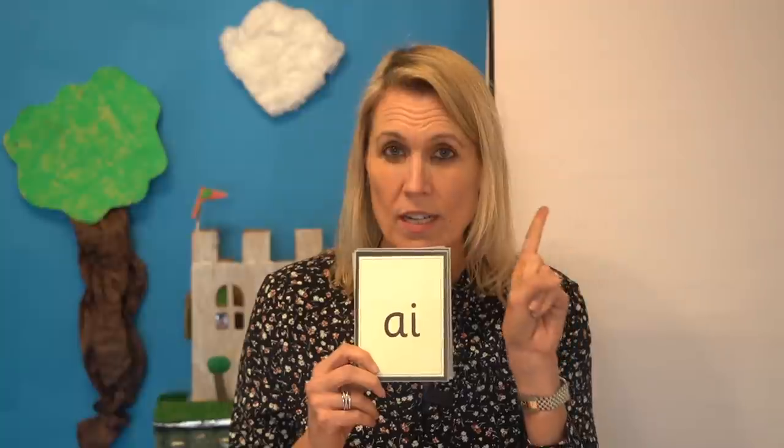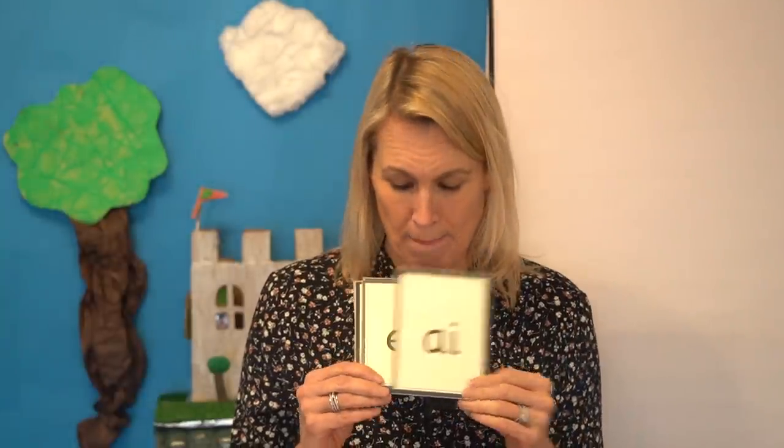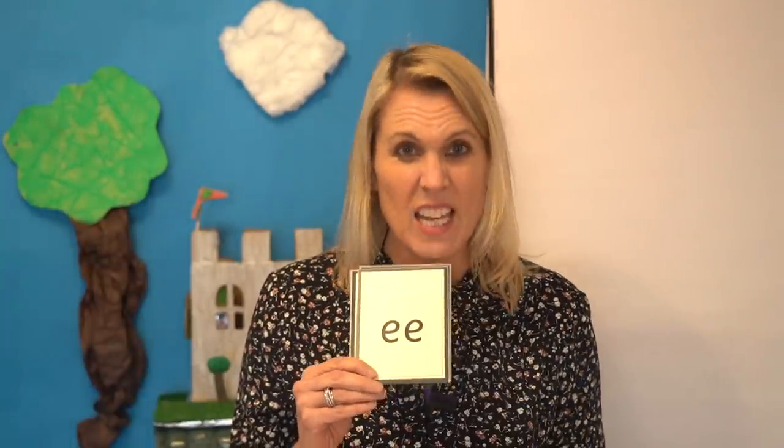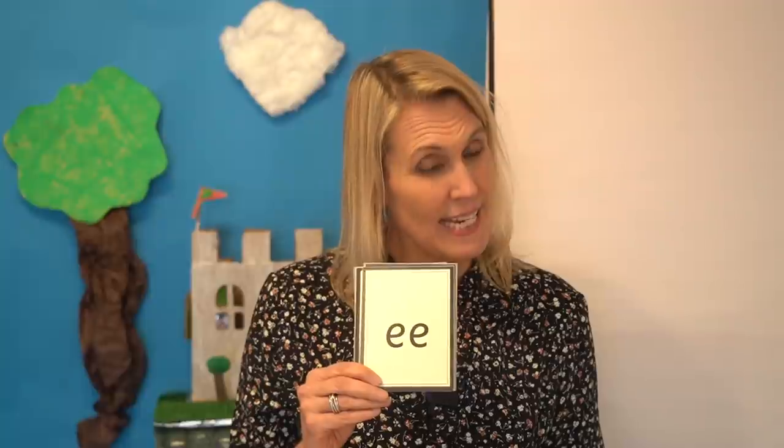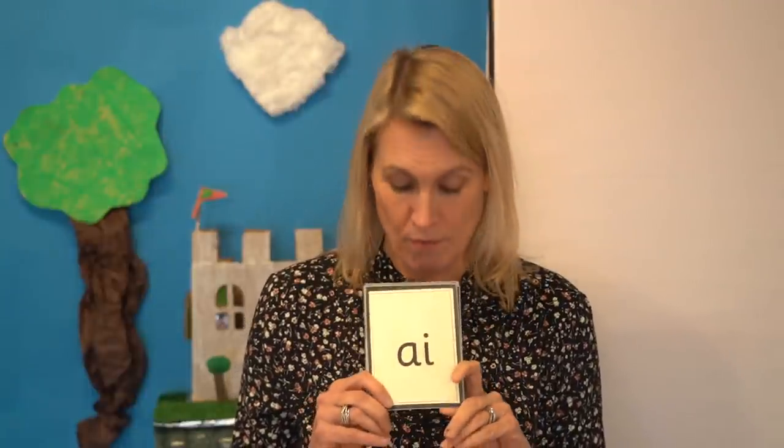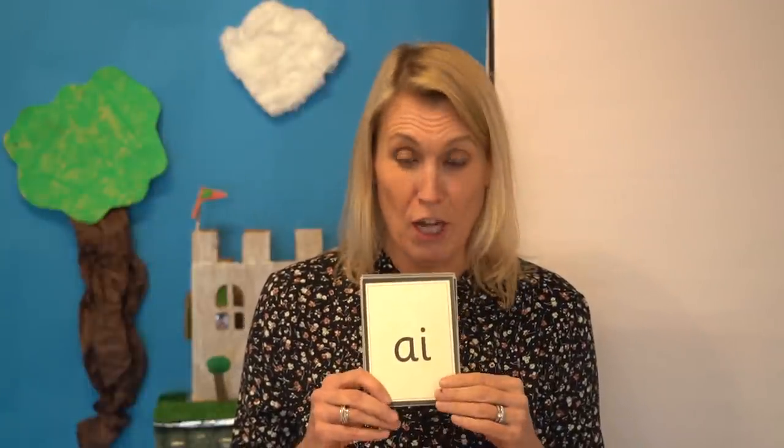This first card says A. It is a digraph — two letters, one sound. And this digraph says E. Now it's your turn. Off you go.